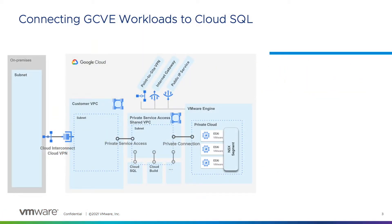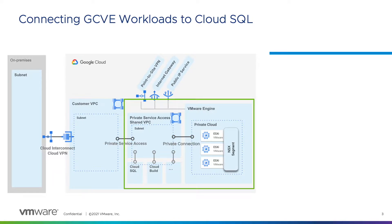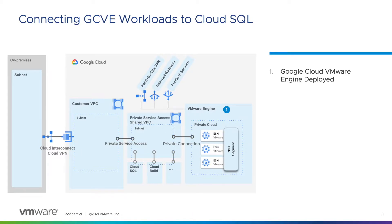We'll use this diagram to keep our bearings in a typical Google Cloud VMware Engine deployment, and we'll focus on services deployed within this green box. We won't deep dive into many of these components — I primarily want to highlight where our Cloud SQL instance lives. I expect that you've already deployed your Google Cloud VMware Engine environments and that you've deployed a VM or container workload within your private cloud.